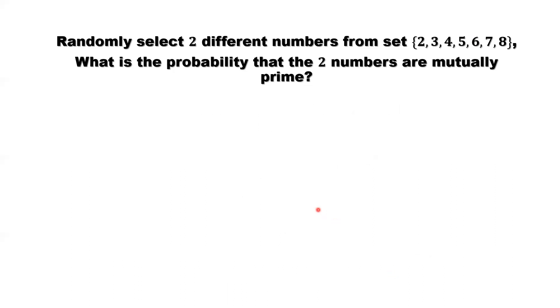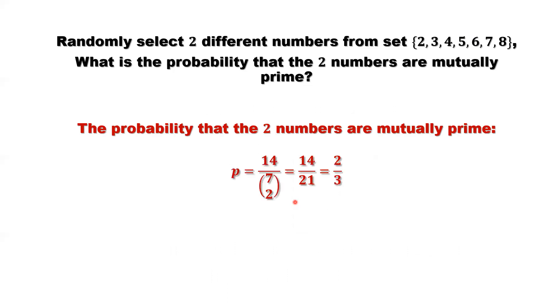We are ready to calculate the probability that the selected two numbers are mutually prime. Equals 14. We just counted. And the seven pick two, that's total combinations. Simplify. It is two over three. This is the answer.